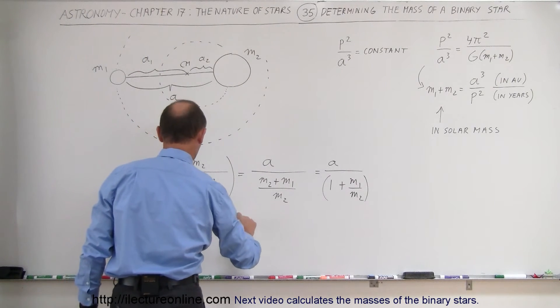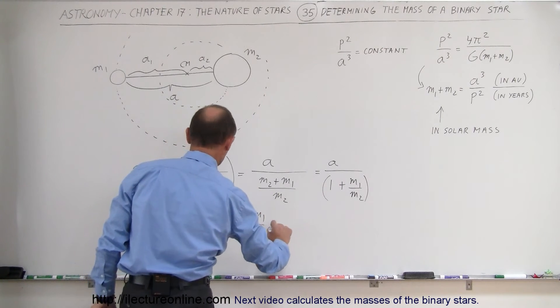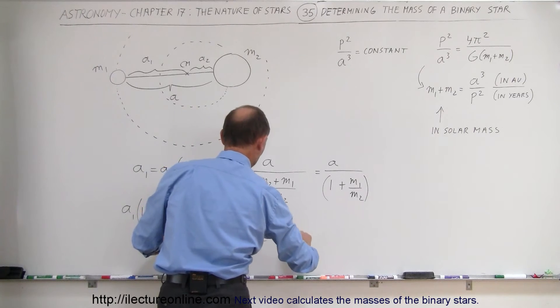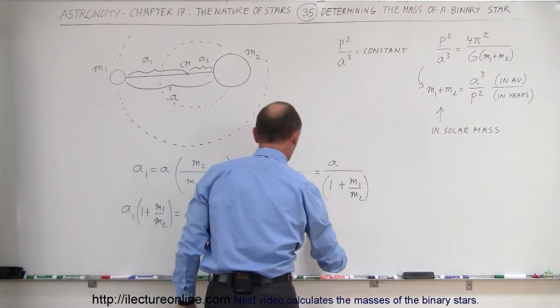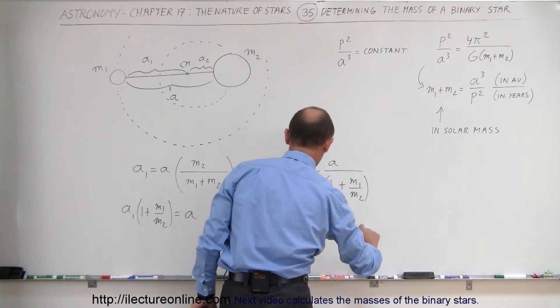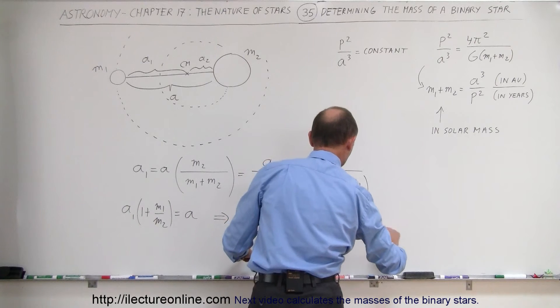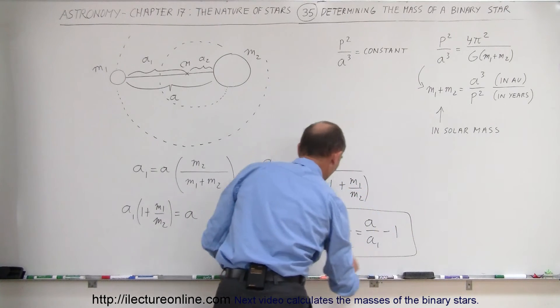So now we can say that we have 1 plus M1 over M2 is equal to A divided by A1. And finally, when we bring the 1 across, now we have an equation that tells us that the ratio of M1 divided by M2 is equal to A divided by A1 minus 1. Now why did we do that?